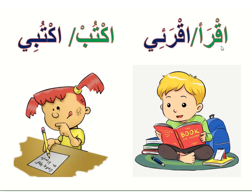Iqra' — read for boys. For girls, always remember to add 'ya' at the end, so it is Iqra'ī. Uktub — write for boys. For girls it is Uktubī. So: Iqra', Iqra'ī, Uktub, Uktubī.